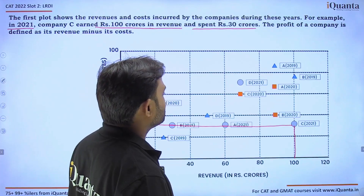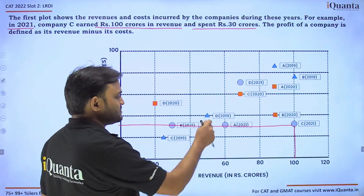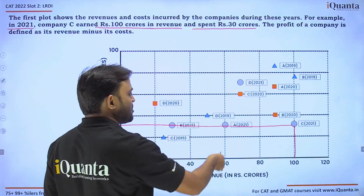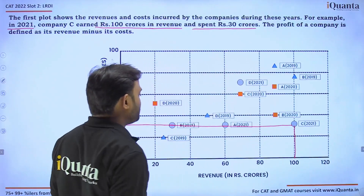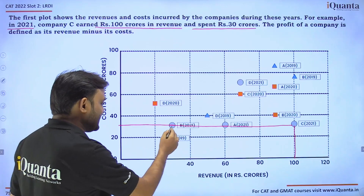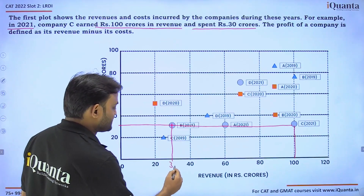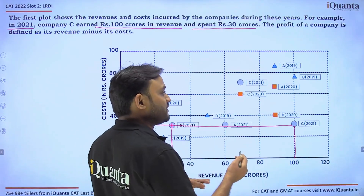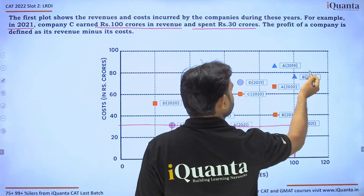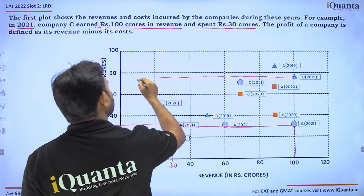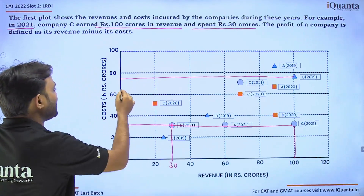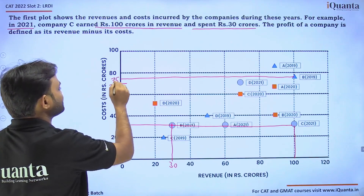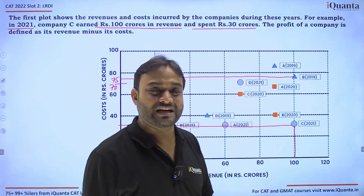Whenever we have a block straight on a line, it's not difficult to read. But if it's exactly in between — like this value — we will take it as 30. If a value is not exactly in between, like B in 2019, we take the middle of the middle. The middle is 70, so the middle of middle we take as 75. There are only three types of blocks.